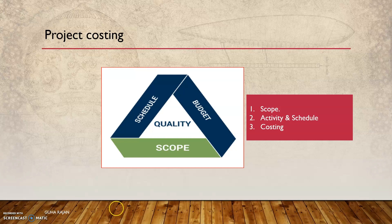One thing to keep in mind is that first and foremost you need to have the project scope in place — what you are going to achieve in that project. That is called scoping. To perform that you need to have a schedule in place: you break down the activities, build up the dependencies, look out for the critical path, schedule the project, and create a Gantt chart so you know which activities need to come first.